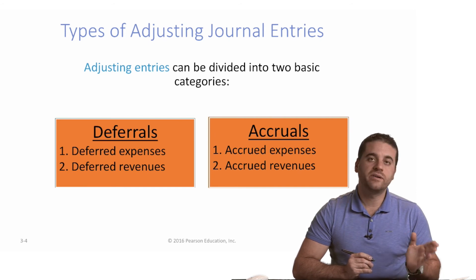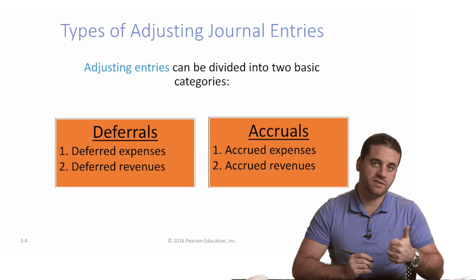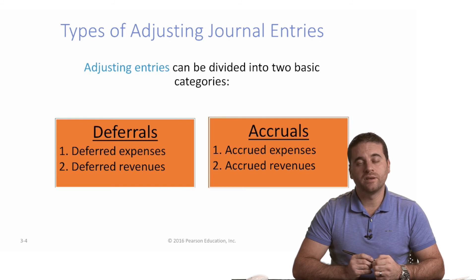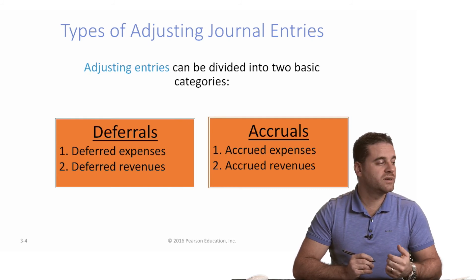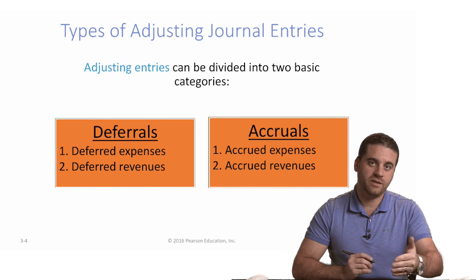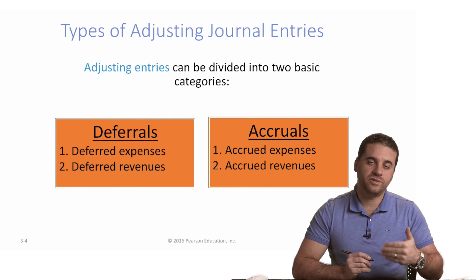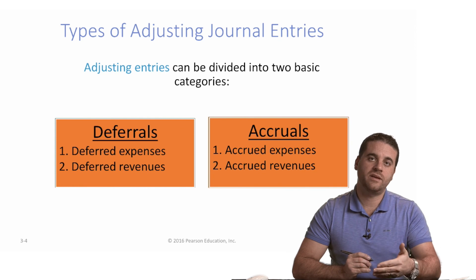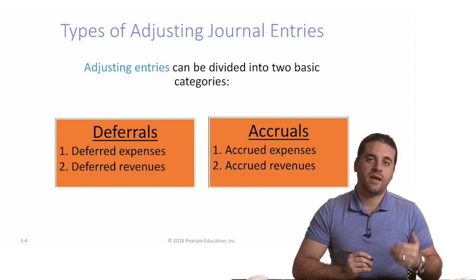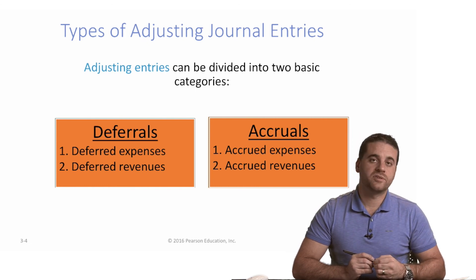The main difference between them: deferral is when we get cash in advance for a service that we will provide in the future, or when we pay for an expense that will incur in the future — so cash in advance, either paid or received, with the revenue or expense occurring in the future. So cash today, revenue or expense in the future. But accrual is the opposite — the revenue or expense is today and the cash is in the future. For example, the utility bill that occurs today has to be recorded as an expense today, but we will pay for it in the future. That's the main difference between deferral and accrual.